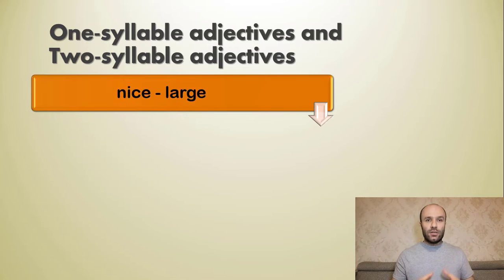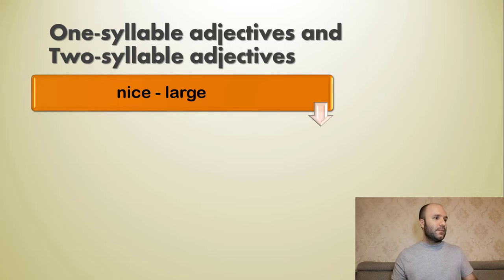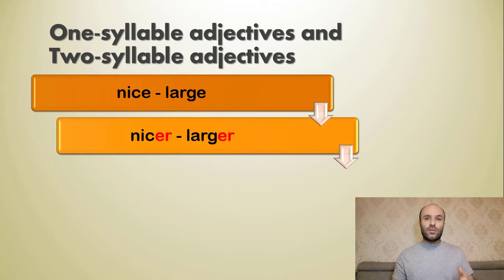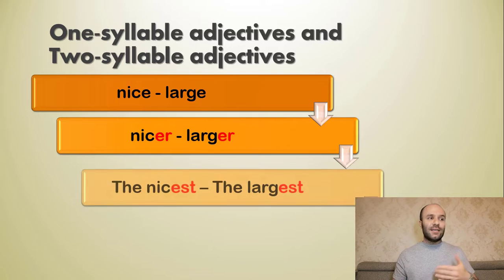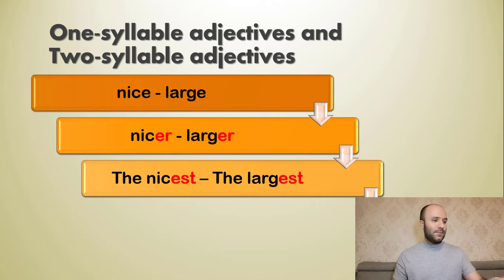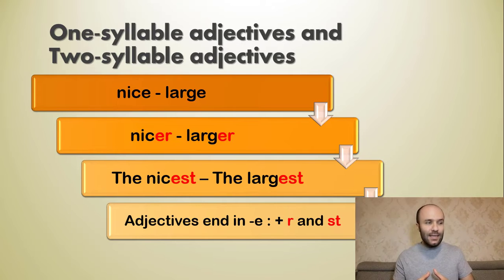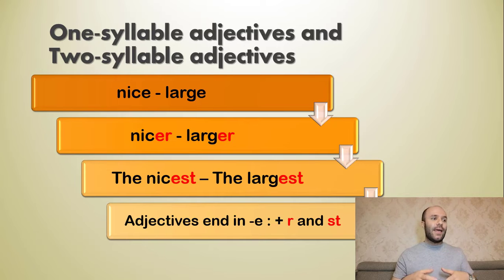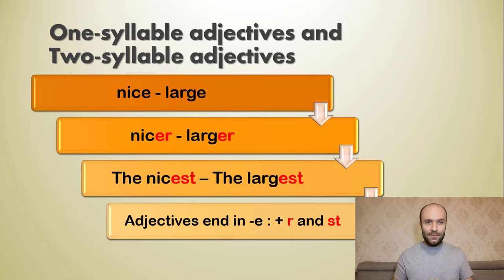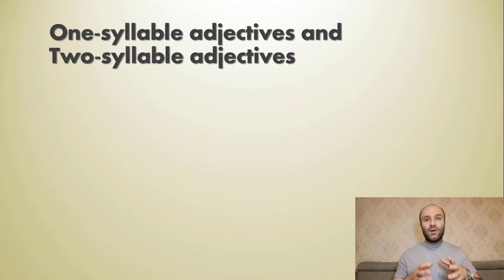For adjectives ending in '-e', like 'nice' and 'large' — one syllable — the comparative form is 'nicer' and 'larger', and the superlative form is 'the nicest' and 'the largest'. The rule is: adjectives ending in '-e', you just add '-r' and '-st'.